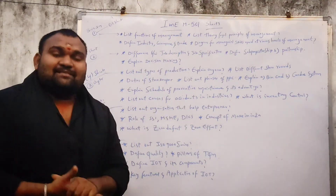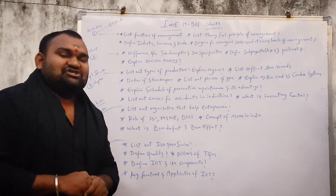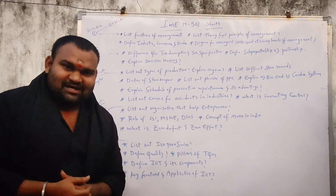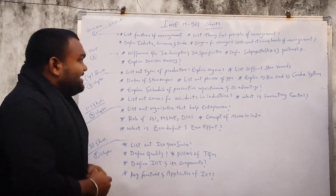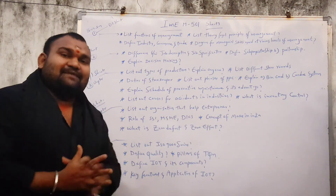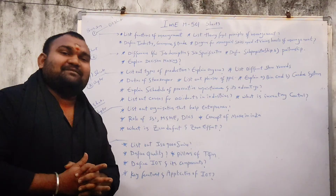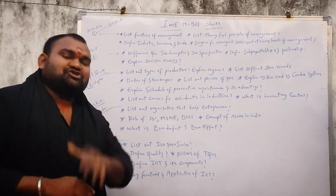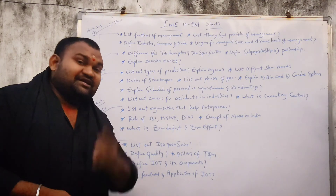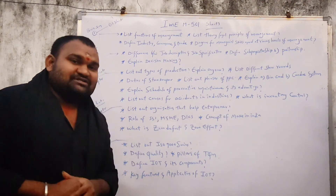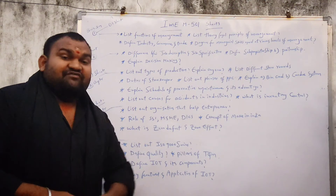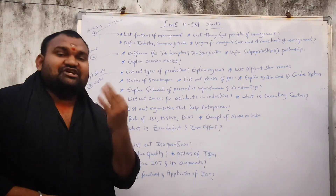In Industrial Management and Entrepreneurship, I have been talking about SSR in short school. We have the 1st chapter, 3rd chapter, 4th chapter, 5th chapter, and 3rd chapter to cover.